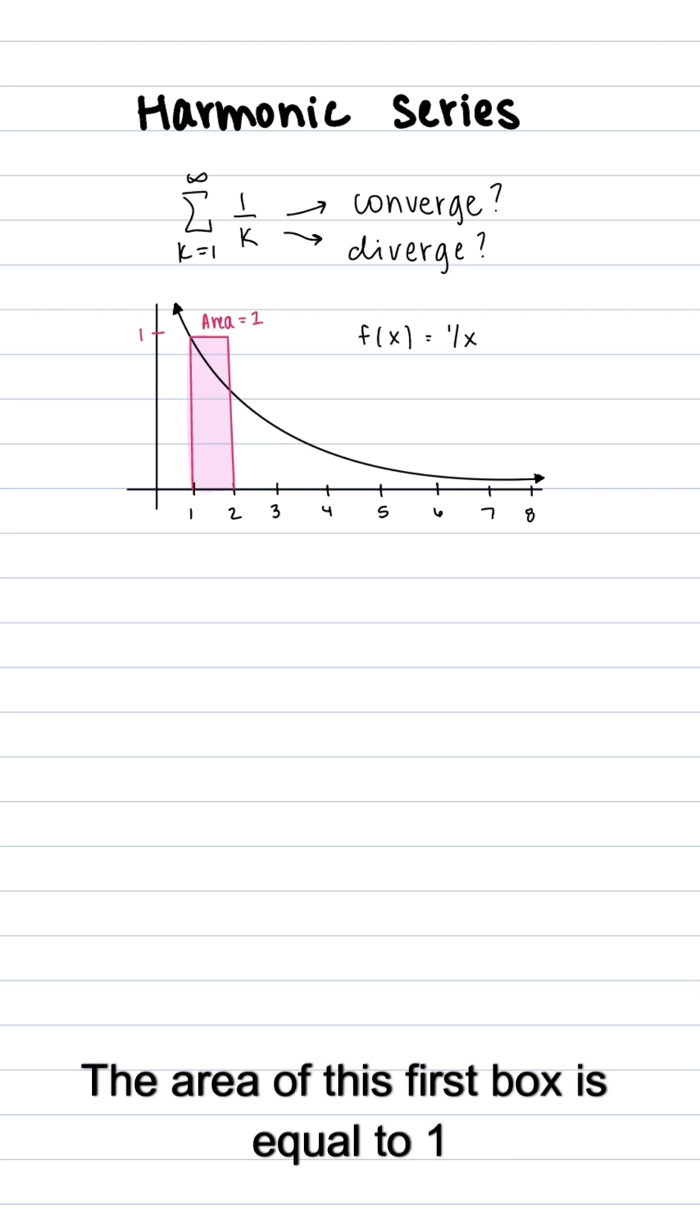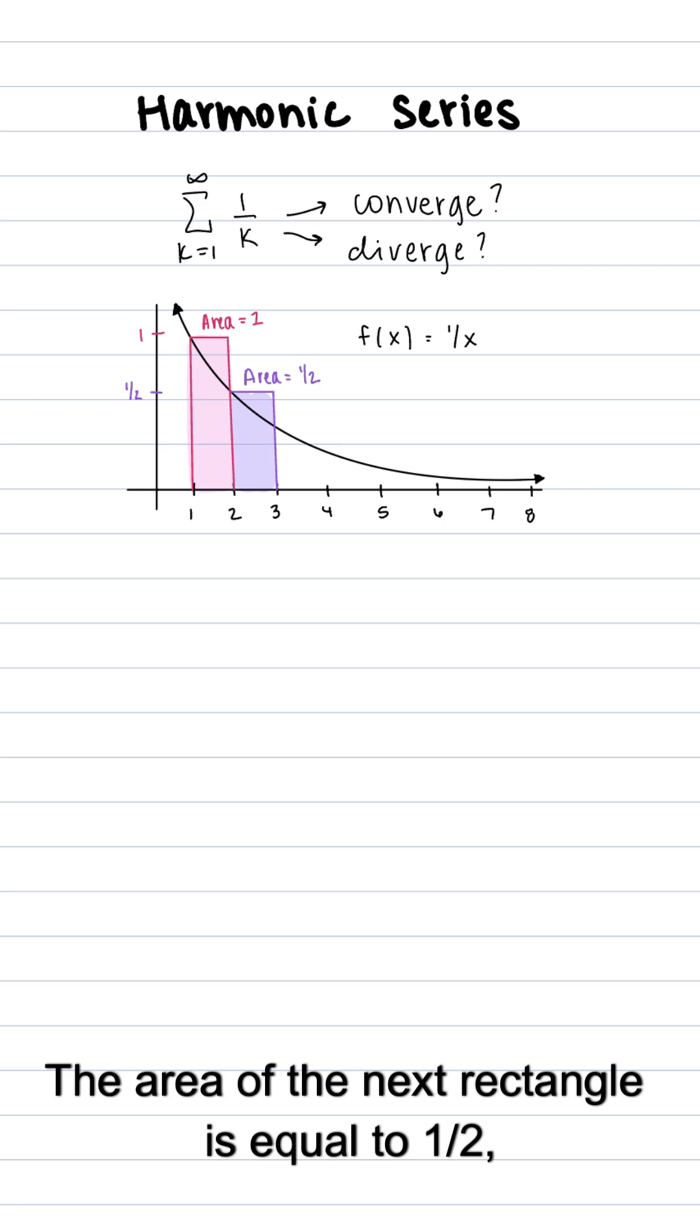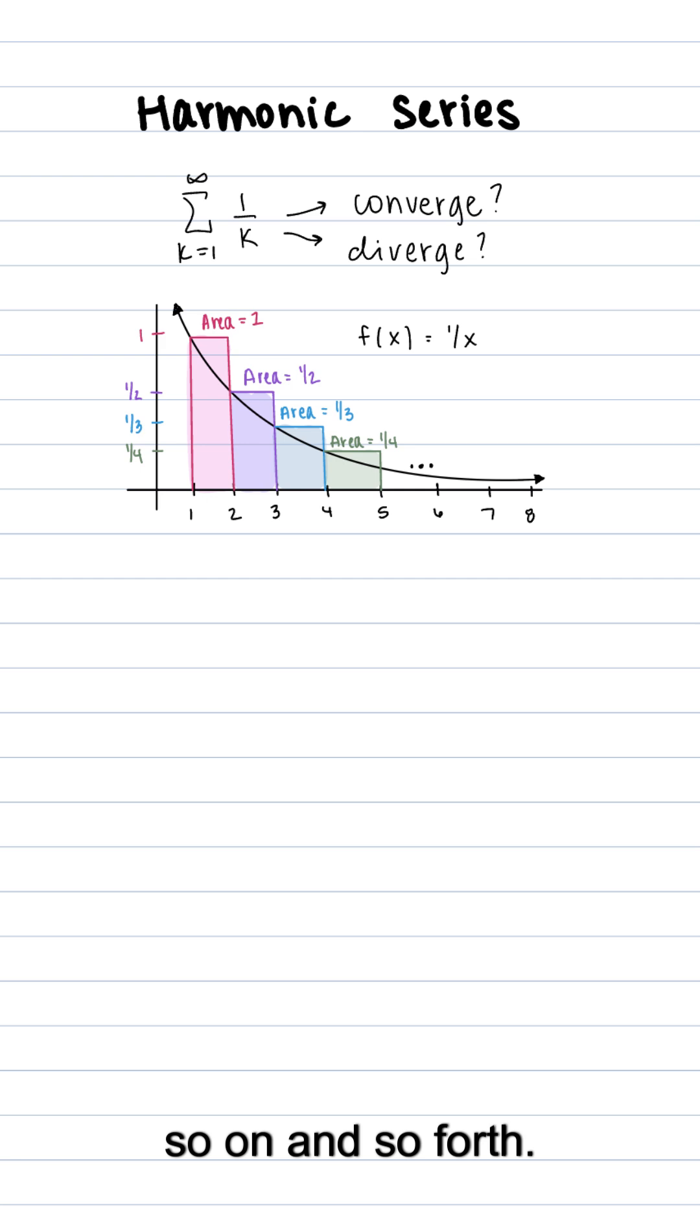The area of this first box is equal to 1 times 1, which is equal to 1. The area of the next rectangle is equal to 1 half, then we get 1 third, 1 fourth, so on and so forth.